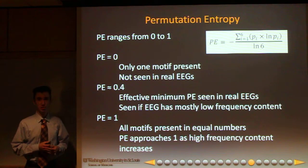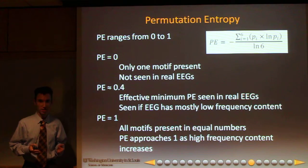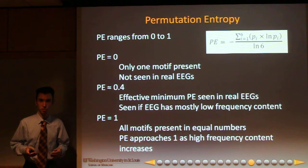Permutation entropy ranges theoretically from zero to one. A value of zero indicates that only one motif is present. That's not physically possible in a real EEG.